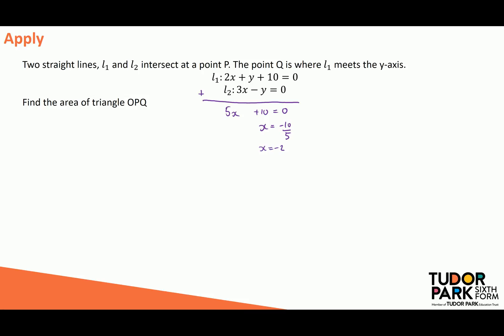Now, if I substitute that back into L2, and I evaluate that at x is equal to negative 2, then that's going to give me 3 lots of minus 2 minus y equals 0, so that would be minus 6 is equal to y. So there I've generated my coordinate pair, so the point P is at x coordinate negative 2, y coordinate negative 6.